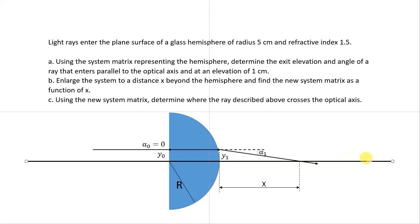Here is our sketch: the black line is the optical axis and we have a glass hemisphere with radius r. The ray is entering at a height of 1 centimeter. When considering question a, it is leaving the hemisphere — obviously at the same height, but we will prove this using the system matrix. It is leaving at height y1 and at angle alpha 1.